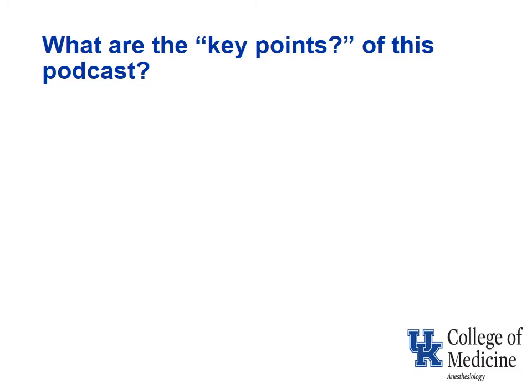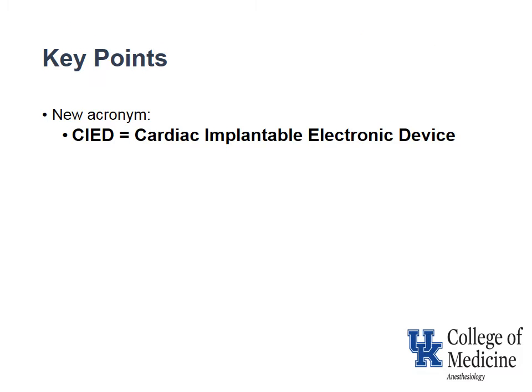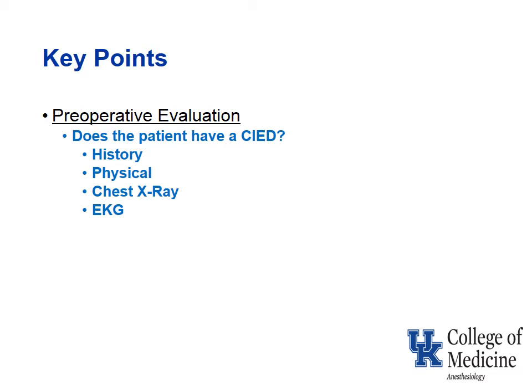So what are the key points of this podcast? First, CIED is a relatively new acronym and stands for cardiac implantable electronic device. For preoperative evaluation, the questions to ask include: does the patient have a CIED? Not every device implanted in the deltopectoral area is a cardiac device. Therefore, a focused history, physical, chest x-ray, and electrocardiogram are required. Each will give you important information, including the symptoms that the patient had requiring the device, the location of the device, the number of leads, and a clue as to what kind of device it is and perhaps the function of the pacemaker or device.